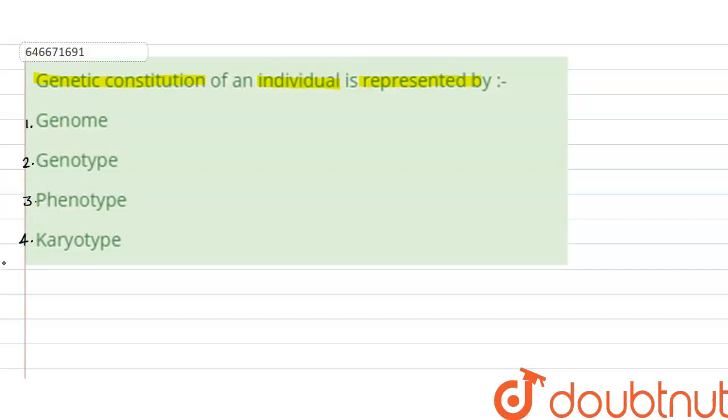...if we start from fourth option, karyotype means the division of this cell, the division of the nucleus, is known as karyotype.